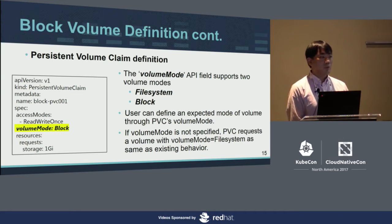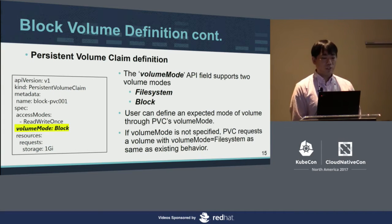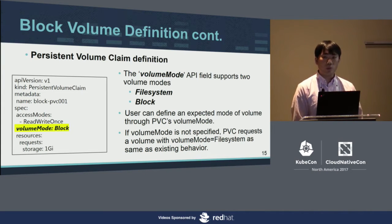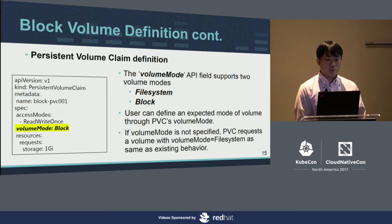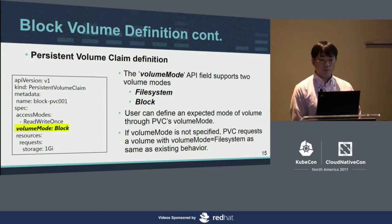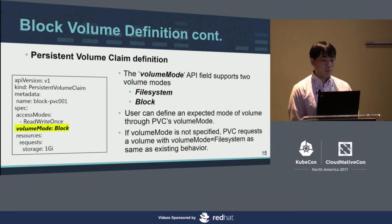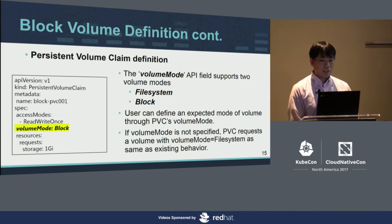The persistent volume claim definition is defined by the user. The PVC also supports the `volumeMode` parameter. In this case, `volumeMode` is set to `Block`. This field also supports two values: `Filesystem` and `Block`. Using the PVC, the user can define the expected volume mode. If `volumeMode` is not specified, the PVC requests a volume with `volumeMode: Filesystem`, which keeps compatibility with existing behavior.